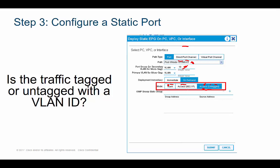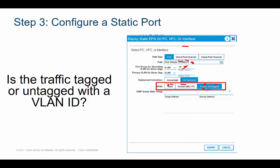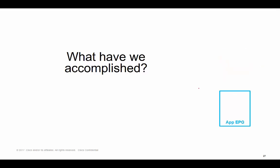The third option is access 802.1p. This configures the interface as a trunk port but makes the VLAN native — like doing switch port mode trunk followed by switch port trunk native VLAN 10. So when configuring a static port, you can define whether to leave it as an access port, make it a trunk port, or make this VLAN the native VLAN on a trunk port. In our case, traffic will come in untagged from the bare metal server, ingressing into interface 1/3.